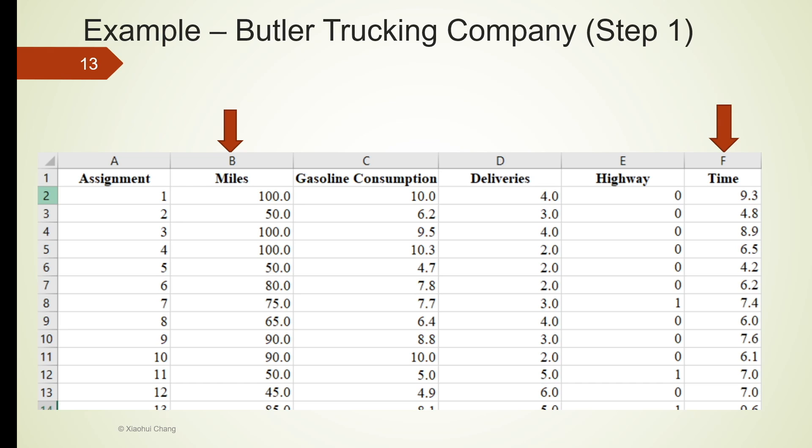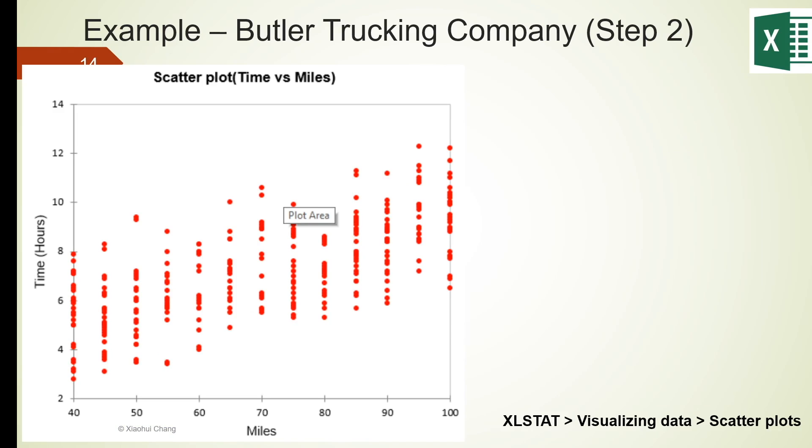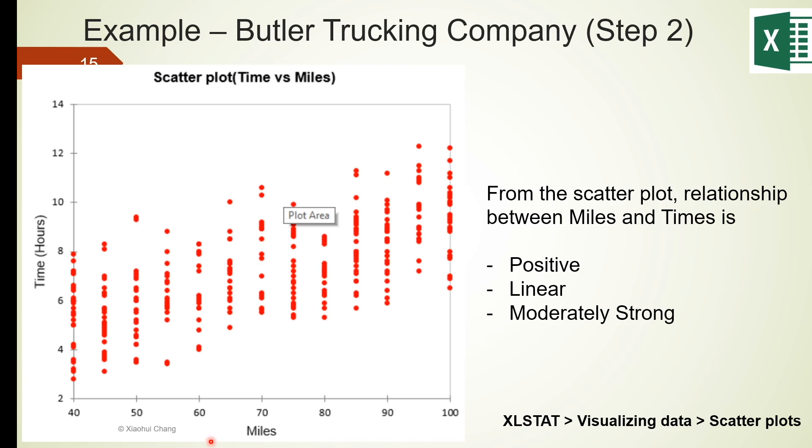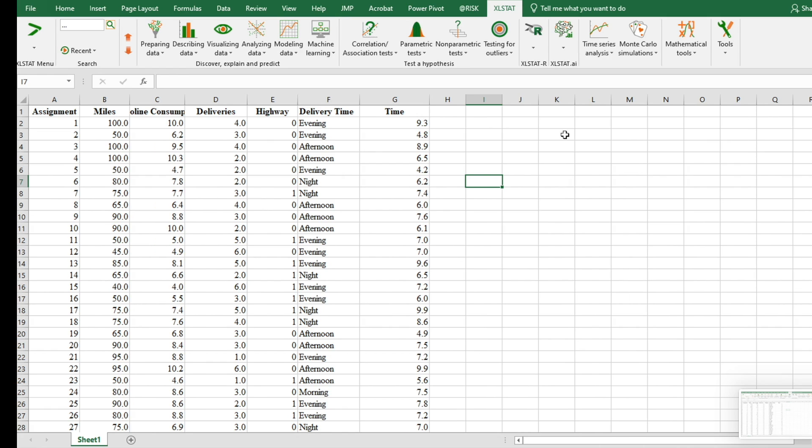In step two, we check whether the relationship between miles and time is indeed linear. We can do that through two different approaches. The first approach involves a scatter plot. You can do that using Excel data analysis or Excelstat. Details on installation of Excelstat can be found on our course site. In Excelstat, just click on visualizing data and then scatter plots. I usually like to plot the dependent variable on the vertical axis and the miles, which is the independent variable on the horizontal axis or X axis. From the scatter plot, we can see that as miles goes up, time also goes up.